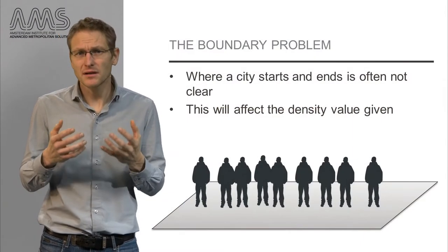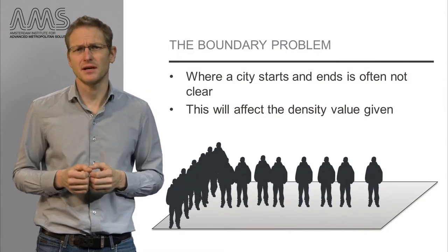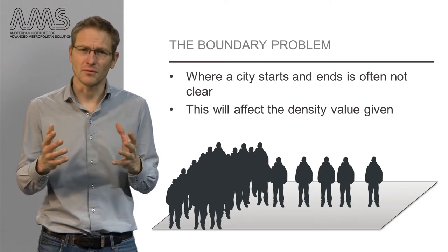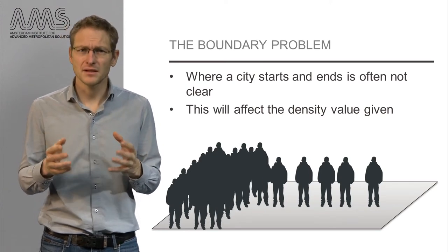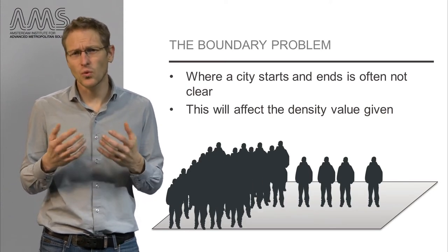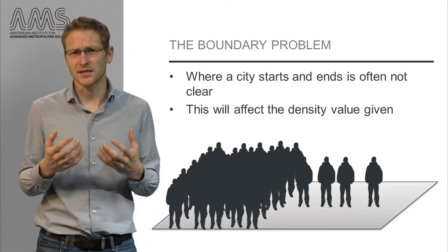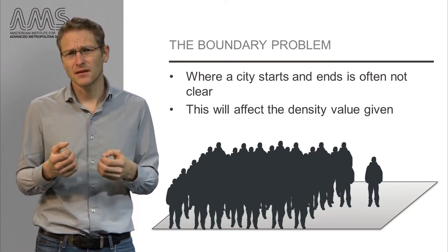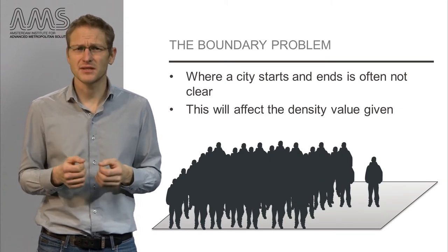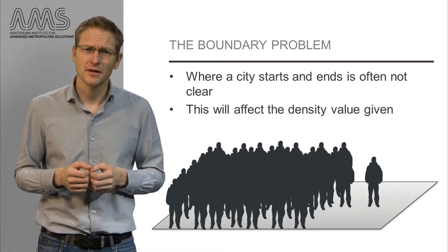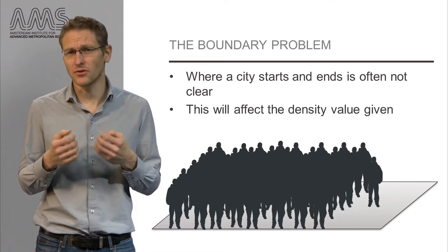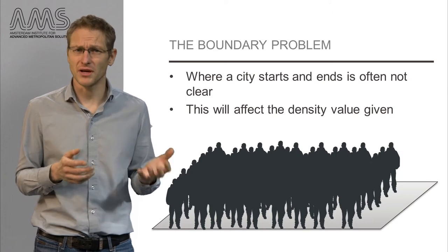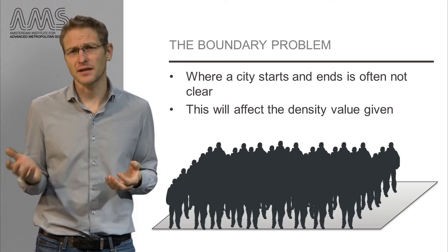But there is a problem with these absolute statements about density. You can call this the boundary problem — it is the question of where does a city start and where does it end. The answer to this question will affect the value of density you arrive at, because it determines the value of the denominator when calculating the ratio of population to land area.